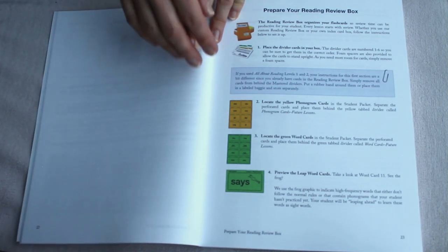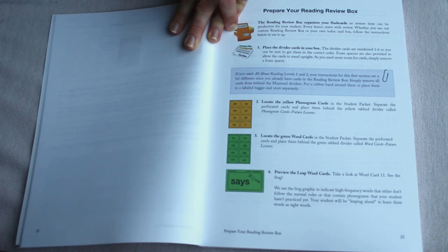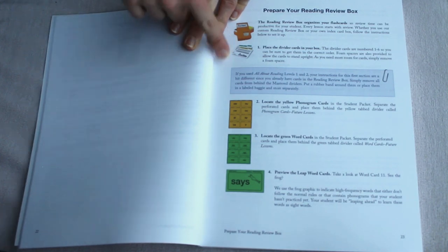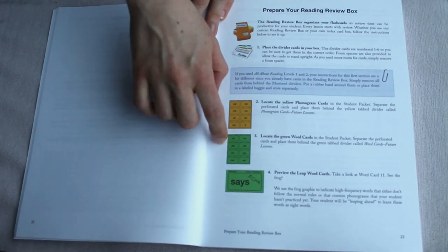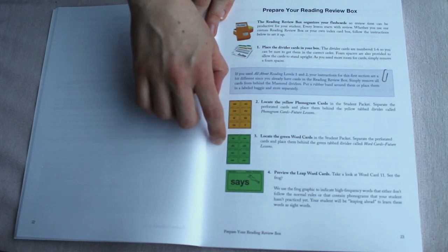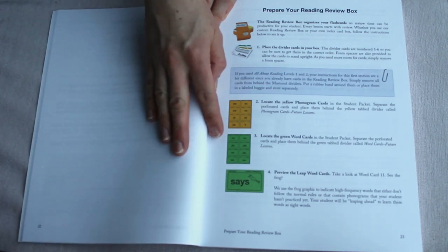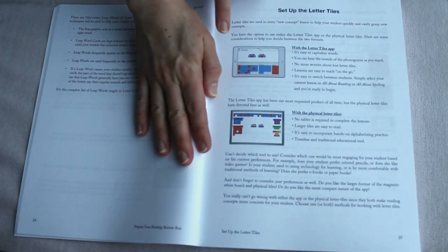When you get your All About Reading shipment, you'll need some sort of a box to store your cards. I just buy the box from the company because the cards fit exactly, and it's sturdy, and then I don't have to spend time trying to find another one. Then, just get the Divider cards. I tried to make my own. It didn't work as well. Just get the Divider cards. It's four dollars. You need to find the yellow phonogram cards and the green word cards. These are all perforated generally pretty nicely, so all you have to do is fold them a few times and rip them apart.